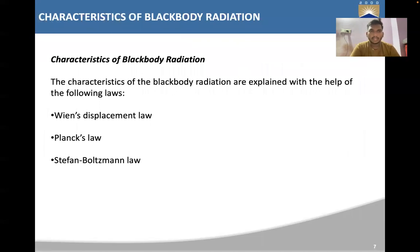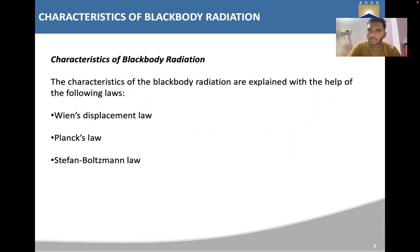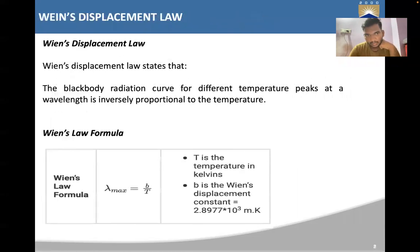The characteristics of black body radiation are explained with the help of three laws: Wien's Displacement Law, Planck's Law, and Stefan-Boltzmann's Law. Let's move to the first law — Wien's Displacement Law.